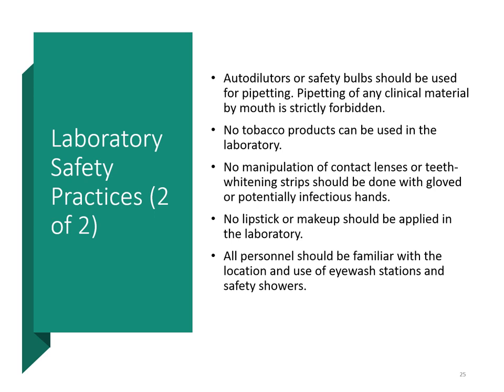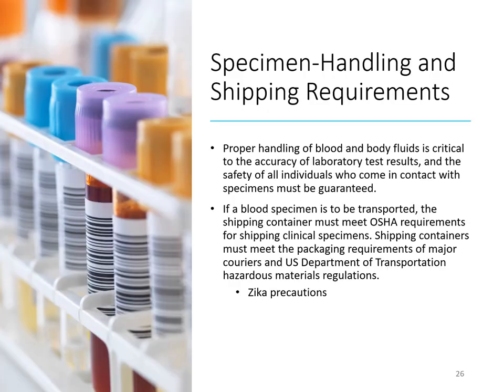You should be familiar with where your eyewash station and safety showers are. If you get a chemical spill on your clothes, you need to know the procedure and where the safety shower is to prevent the chemical from reaching your skin and causing a chemical burn. With specimens, make sure you know how to properly handle them, and if they require shipping or transport to another facility, ensure they are packaged properly — treating anything you touch as potentially hazardous.